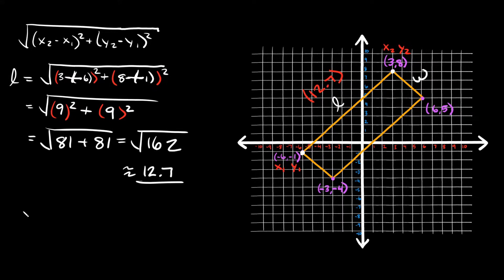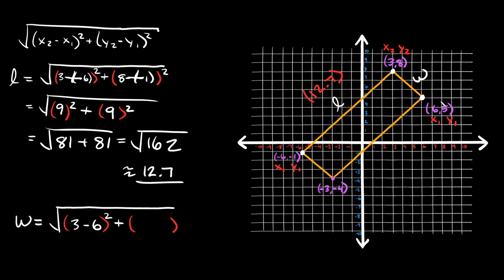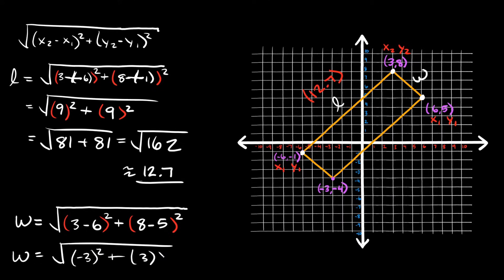Now we just have to find the width, again using the distance formula. This time we use the points (3, −8) and (6, −5). Plugging in: the square root of (3 minus 6) squared plus (8 minus 5) squared. Three minus six equals negative three, and eight minus five equals three. Negative three squared is nine, three squared is nine, so we have the square root of 18, which is approximately 4.2.